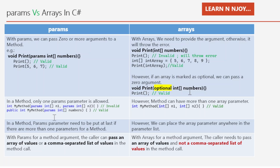Difference two: in a method, only one params parameter is allowed. That's why the first statement with two params parameters is invalid, but the second with one params parameter is valid. However, with arrays a method can have more than one array parameter — for example, passing two int arrays is valid — so there is no restriction on the number of array parameters.